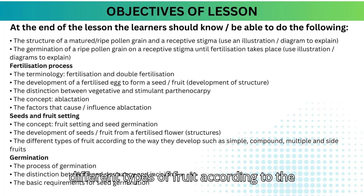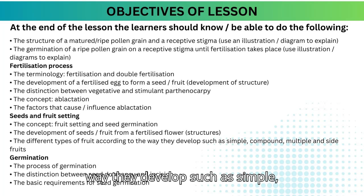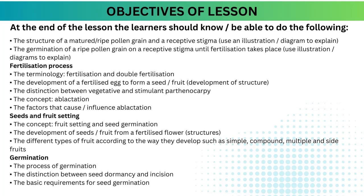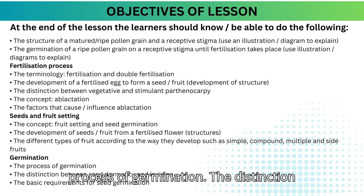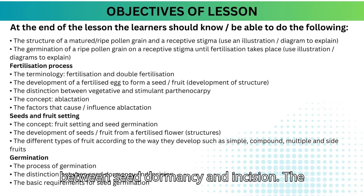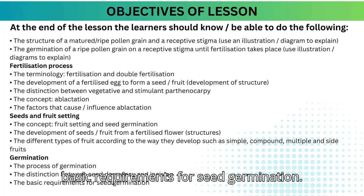The different types of fruit according to the way they develop, such as simple, compound, multiple, and accessory fruits. Germination: the process of germination, the distinction between seed dormancy and incision, and the basic requirements for seed germination.